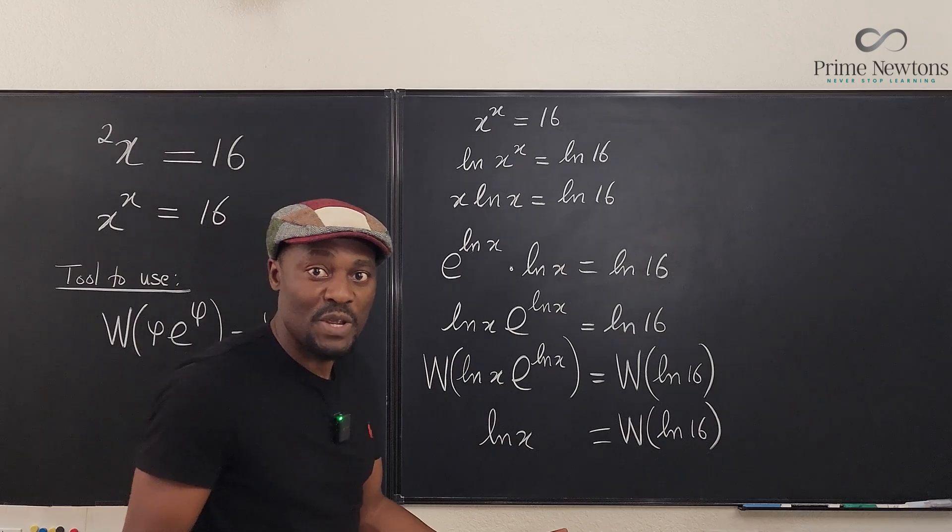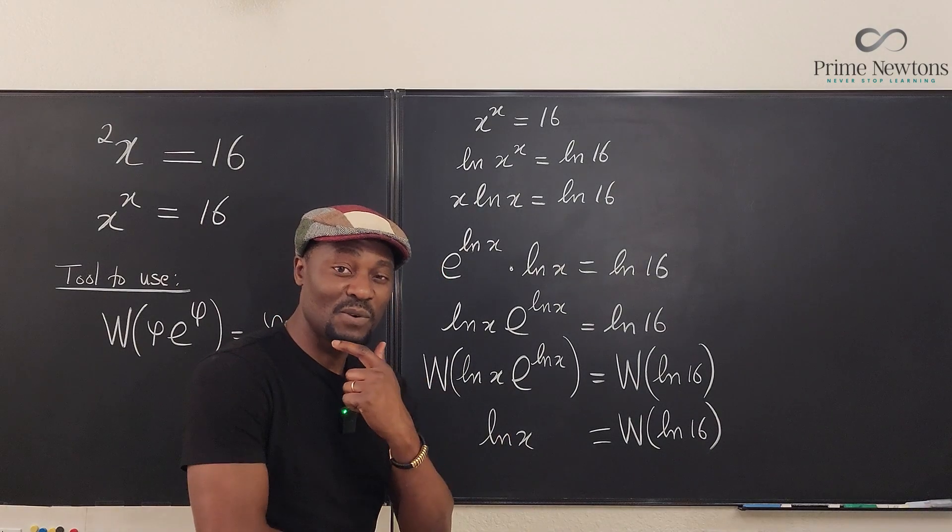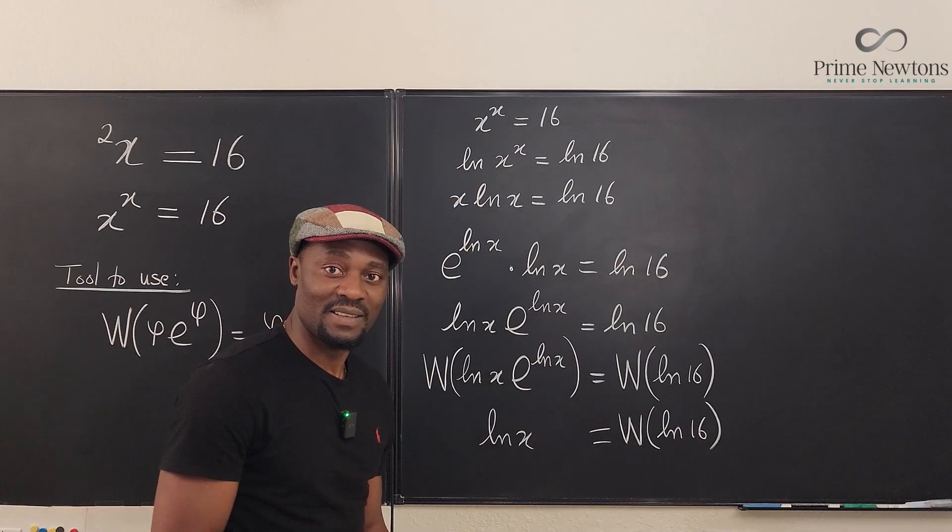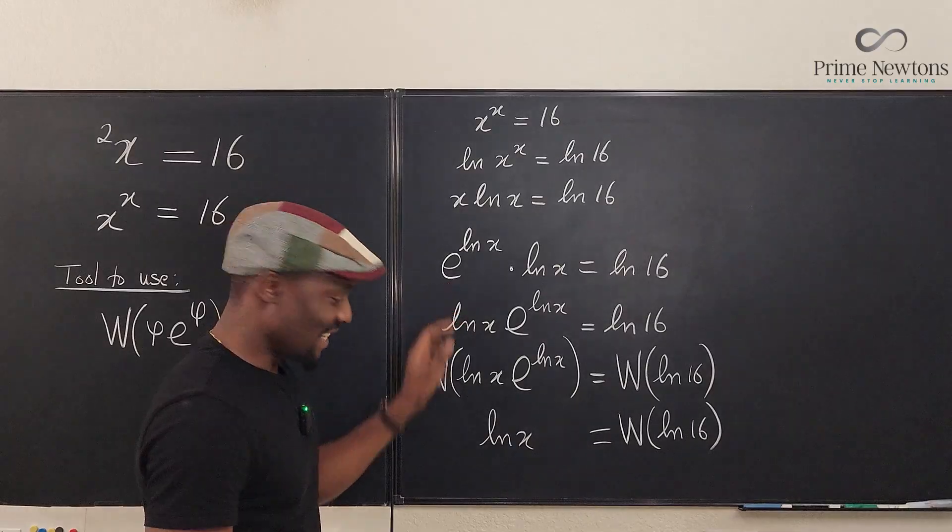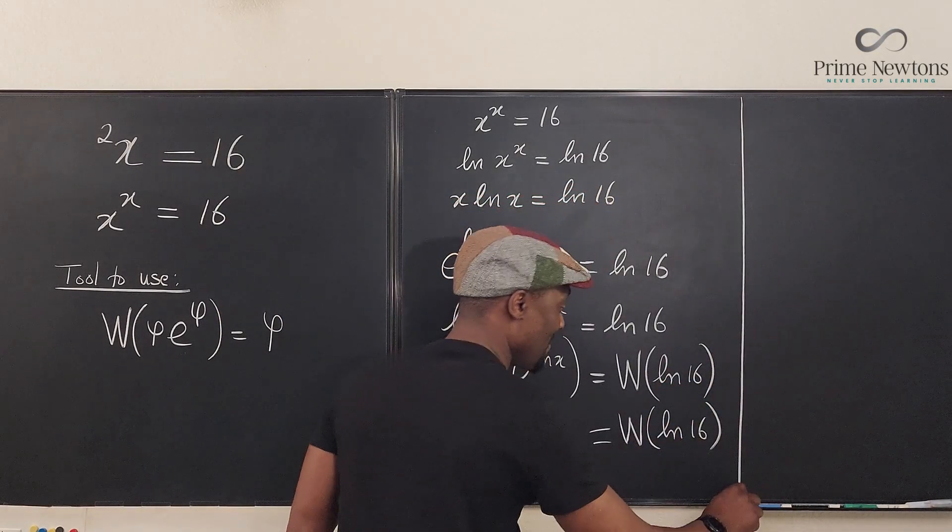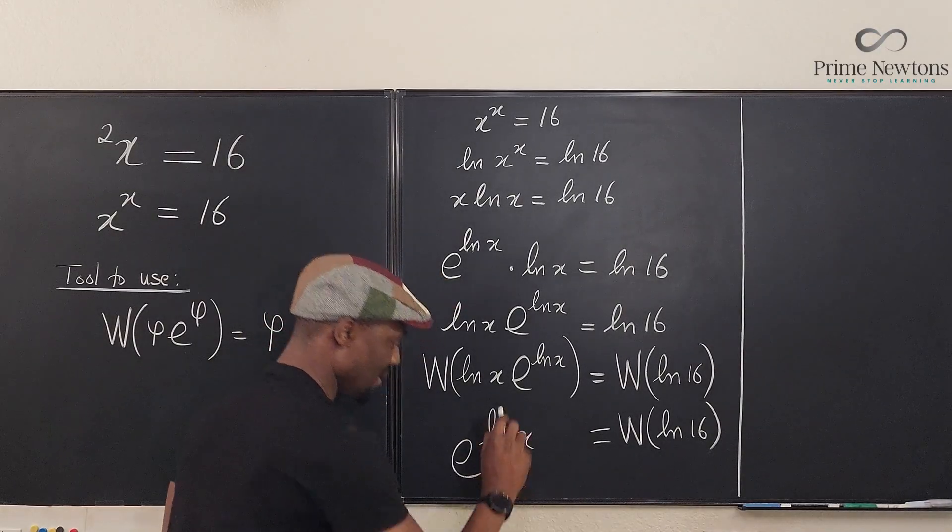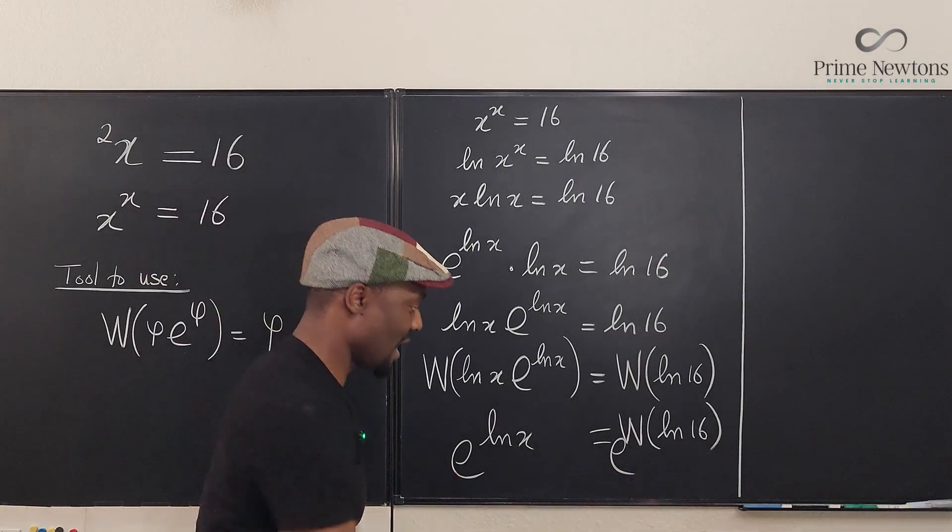But remember, we're not looking for the natural log of x. What are we looking for? We're looking for x. How do you get x out of ln of x? You just take the e, just like we did here. Take the e of ln of x and x comes back out. So if we clean this up, we're going to take the e of both sides. See what I'm going to do? I'm going to put e here and I'm going to put e here. Well, I can't do anything to this side.